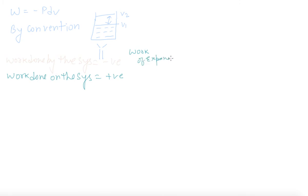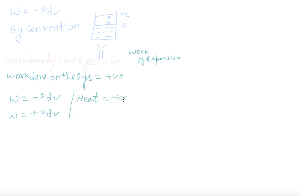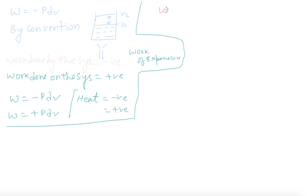So W = minus PdV means work done by the system, and W = positive PdV means work done on the system. Similarly, heat given by the system is given a negative sign, and heat absorbed by the system is given a positive sign. This is a very important topic for 11th standard students — work done by the system and its sign convention.